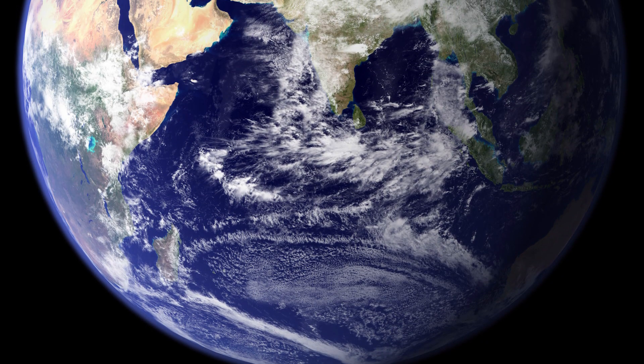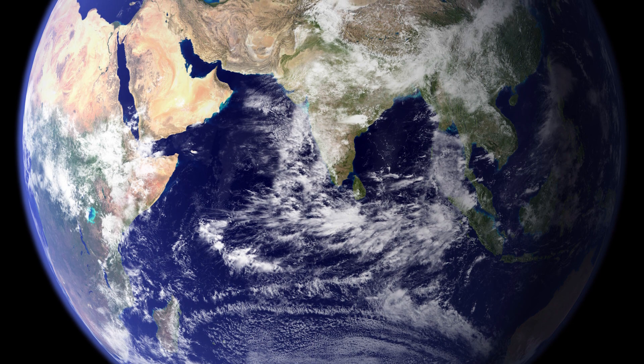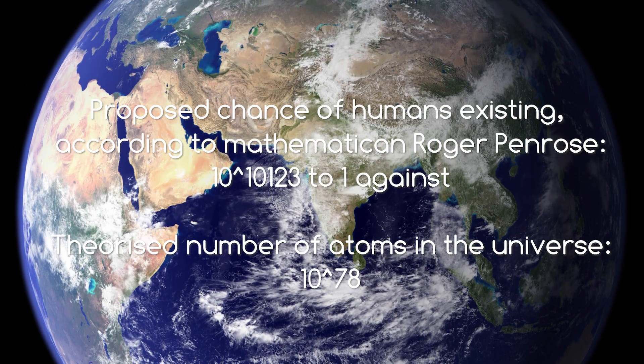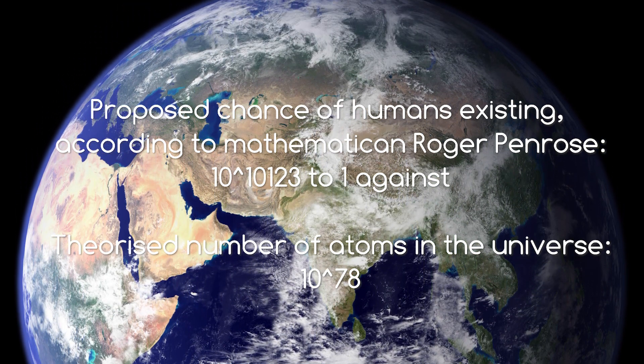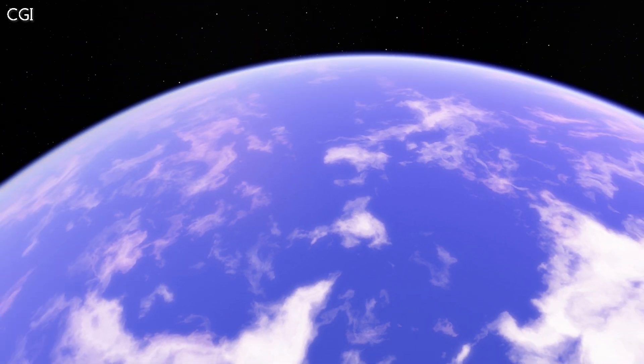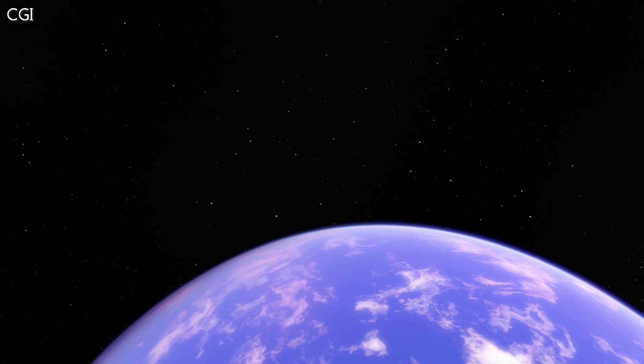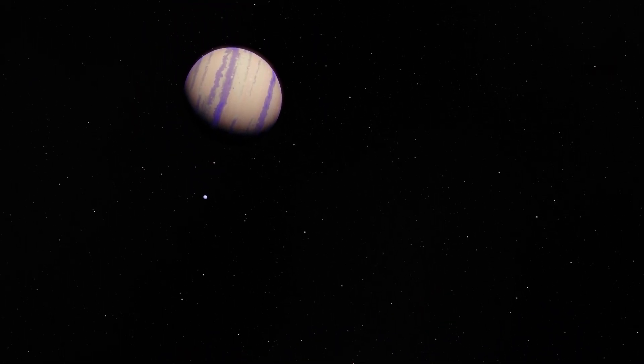Some people claim that all factors considered, the chances of humans being able to develop and live on Earth was 10 to the power of 10,123 to 1. In other words, extremely unlikely. How many factors actually are needed to be right for life to exist? Is it all over the place, or purely a freak coincidence here? Building on what we know already means the future is going to be very exciting.